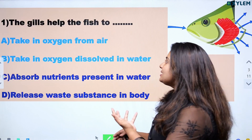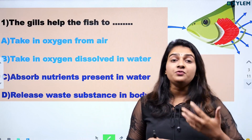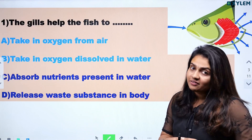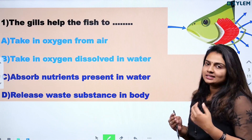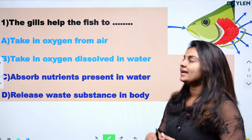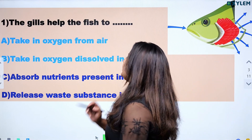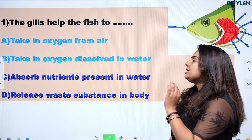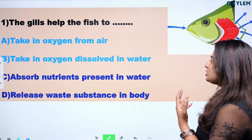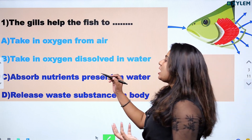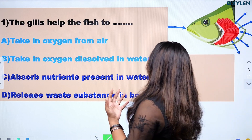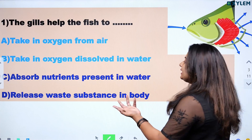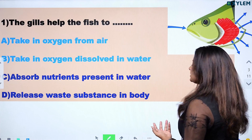The gills help the fish. The options are: A. Taken in oxygen from air. B. Taking oxygen dissolved in water. C. Absorb nutrients present in water. D. Release waste substances in the body.